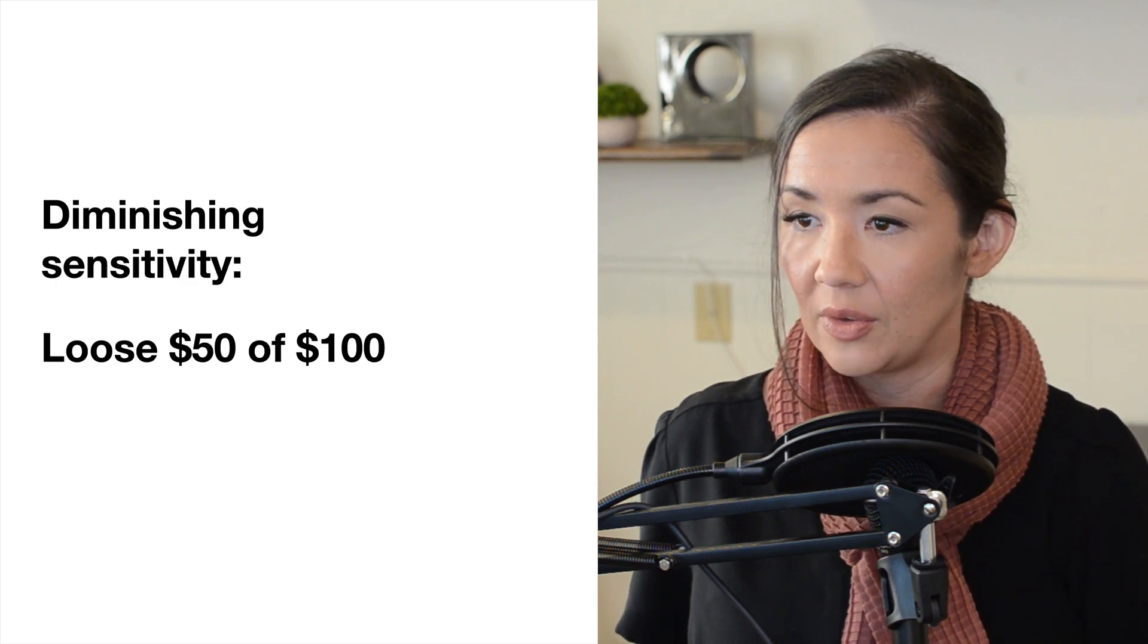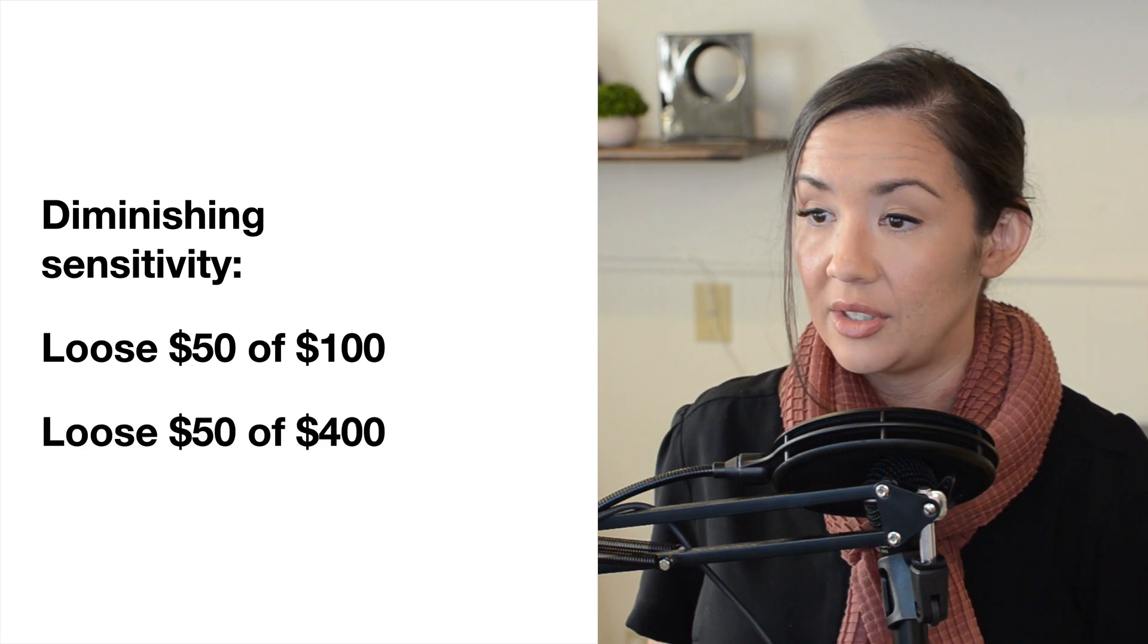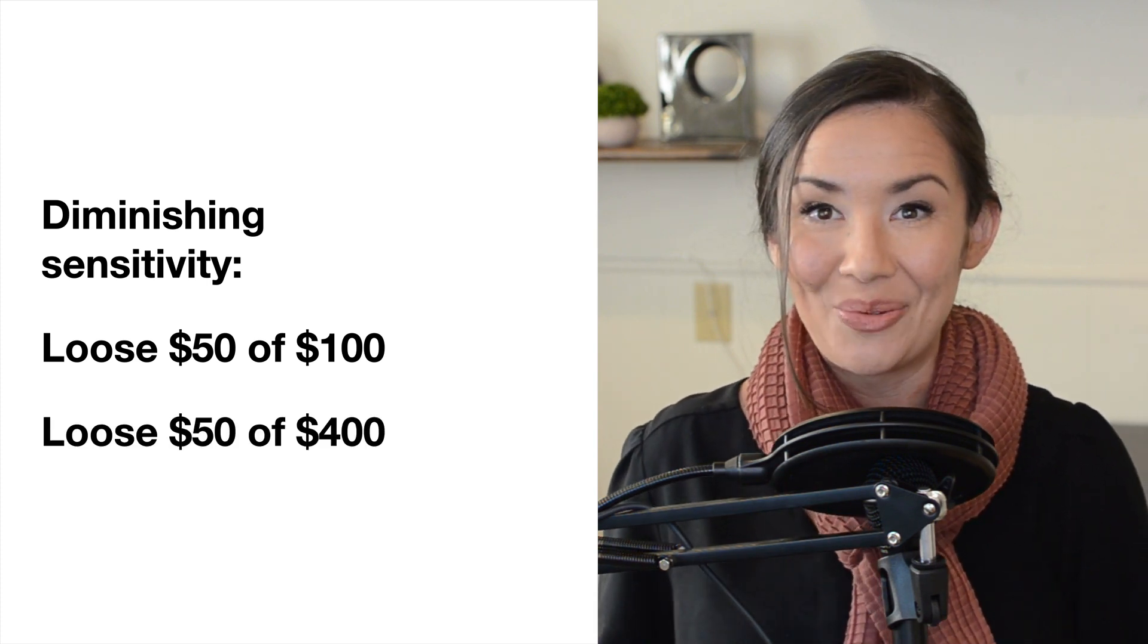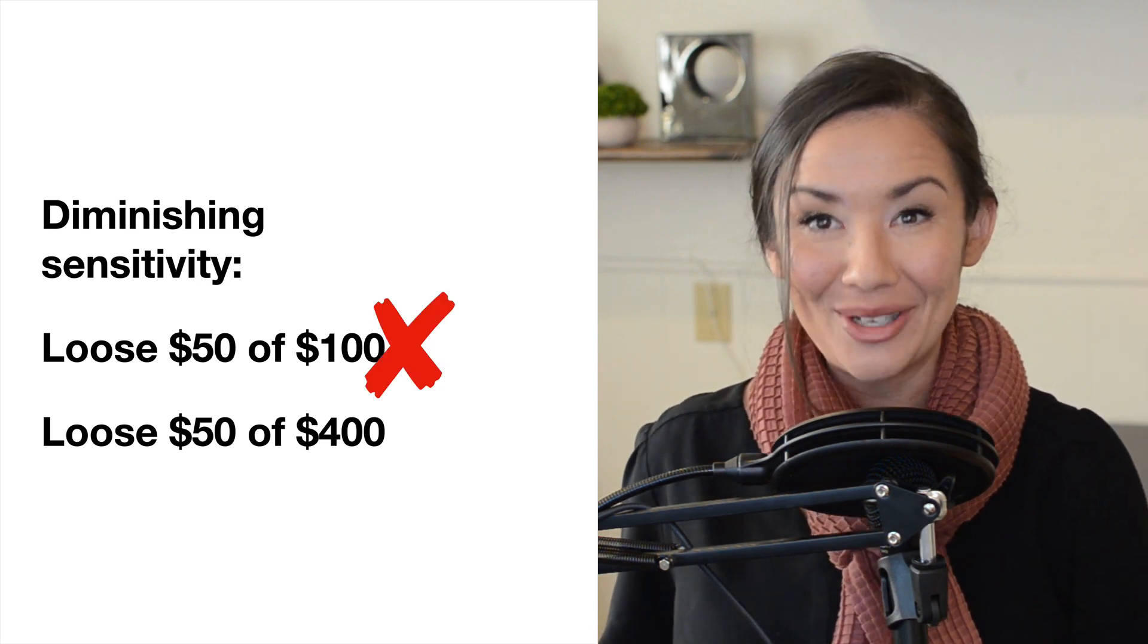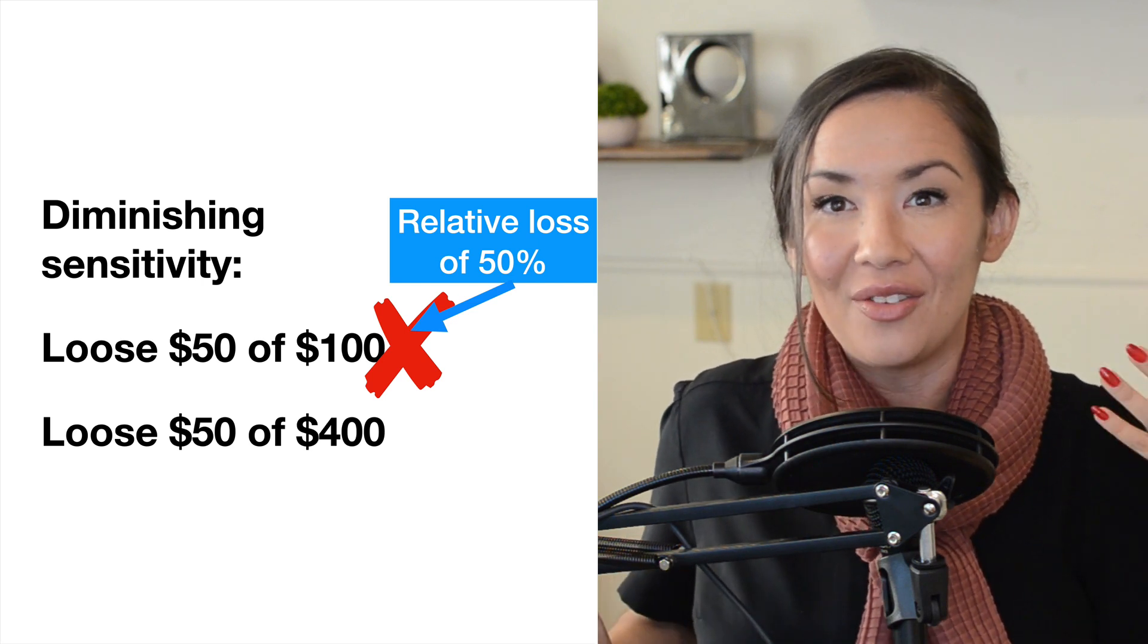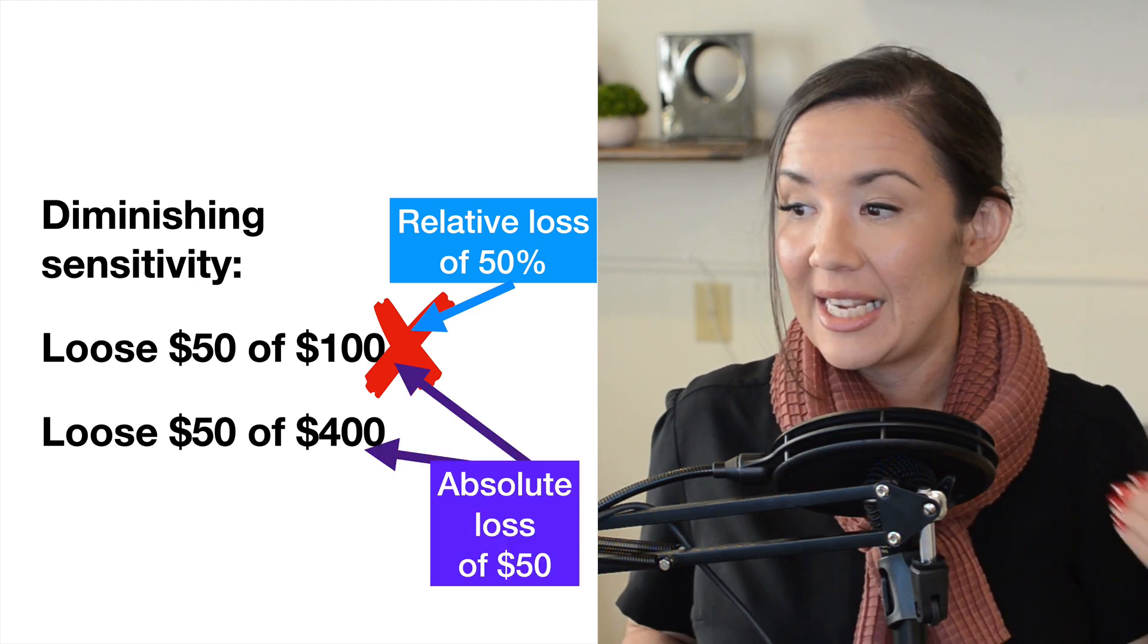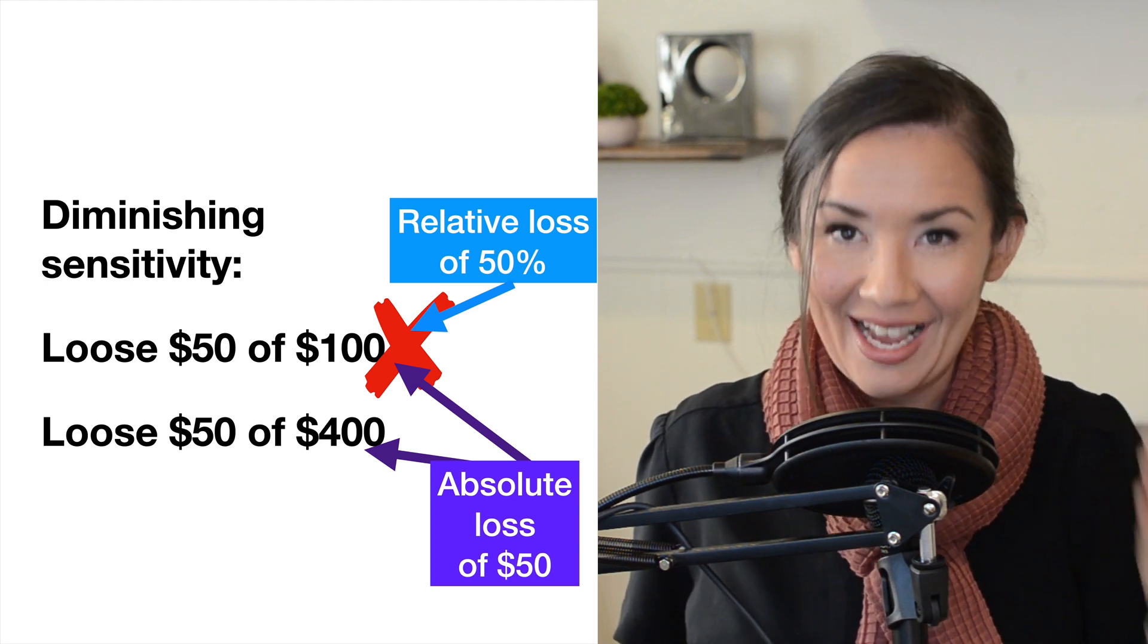If we look at it a different way, let's say you lose $50 out of $100 or you lose $50 out of $400. Which one feels worse? The first one is going to feel worse because you're losing a larger proportion. The ratio of the money that you're losing is larger, so it feels worse even though the absolute loss is exactly the same.